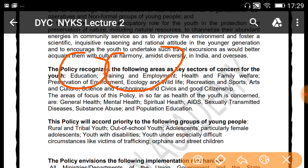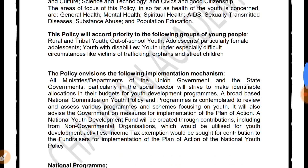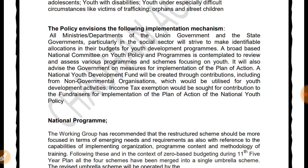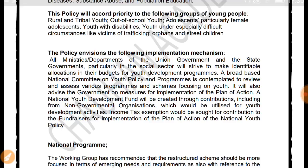The policy will accord priority to the following groups of young people: rural and tribal youth, out-of-school youth, particularly female youth, youth with disabilities, and youth under especially difficult circumstances — such as victims of trafficking, orphans, and street children.